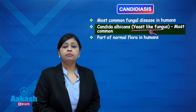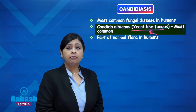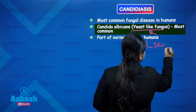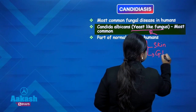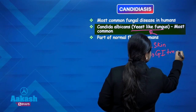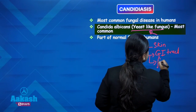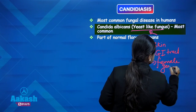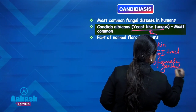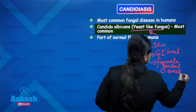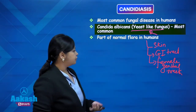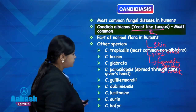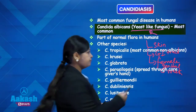Candida forms a part of the normal flora of humans — it is a normal flora in many parts like the skin, GI tract, and female genital tract. Apart from Candida albicans, other species also cause human infections, which are known as Candida non-albicans.